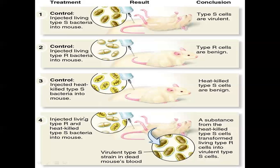But when you inject heat-killed S3 along with R2 type bacteria together, the virulent gene — through induction or transformation — is inserted into the R2 type, making R2 harmful, and the mice die. This is the overall Griffith experiment and the concept of transformation.